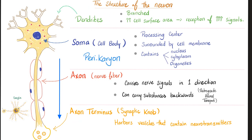Dendrites are branched and increase the surface area, which is why we need many branches. A ganglion is a collection of somas in the peripheral nervous system — they have many dendrites to increase surface area and therefore increase the reception of nerve signals.